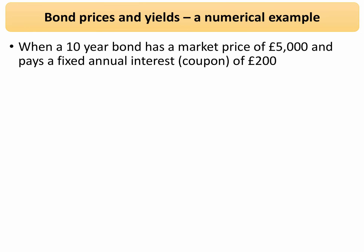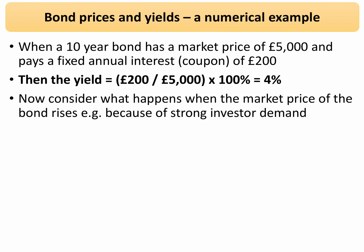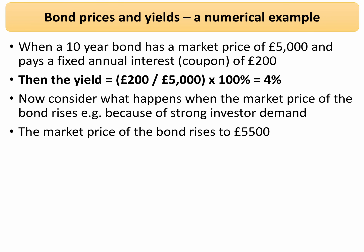Again, take a 10-year bond with a £5,000 initial value and £200 interest — the yield is 4%. Every year, whoever's holding the bond is going to get £200 in interest, representing a 4% yield. Now consider what happens when the market price of the bond goes up, perhaps due to very strong overseas investor demand for a particular new issue of a government bond, causing the market price to increase.